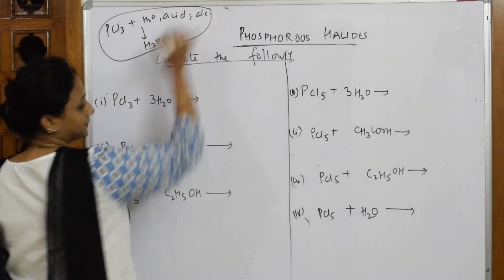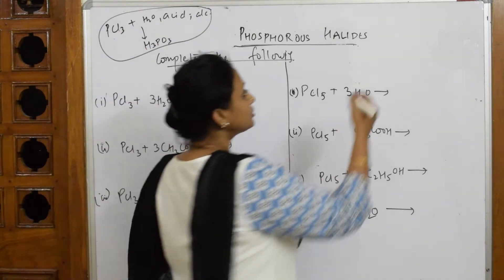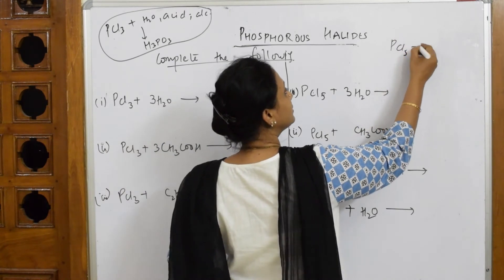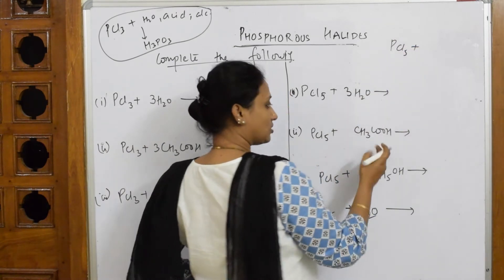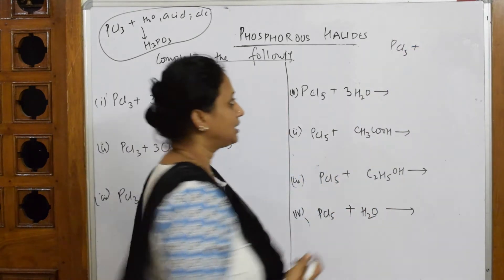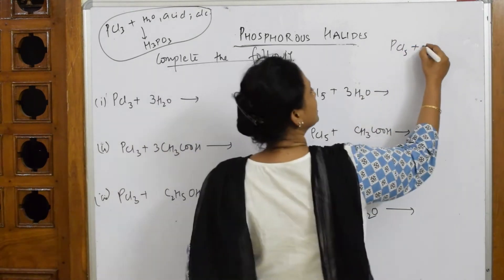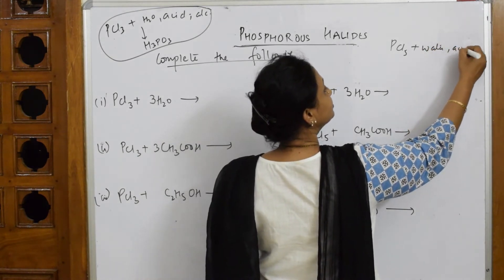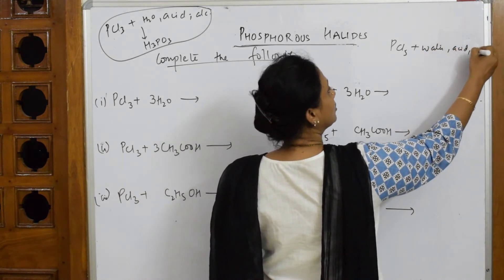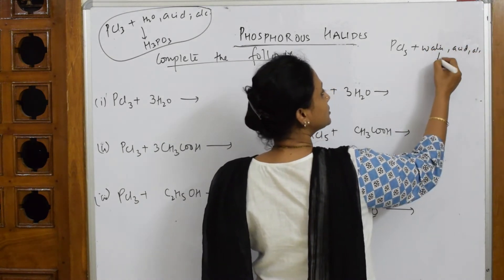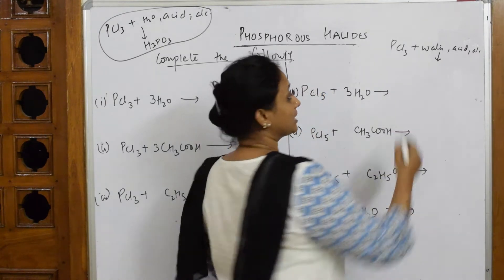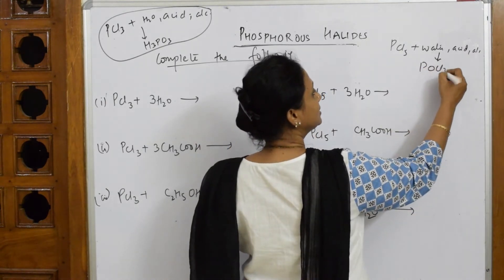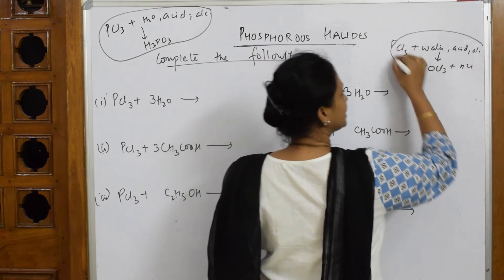Whenever you are treating PCl₅ with water, acid, or alcohol, the product you get is phosphoryl chloride (POCl₃) plus HCl. That is the compulsory product. Remember this logic.